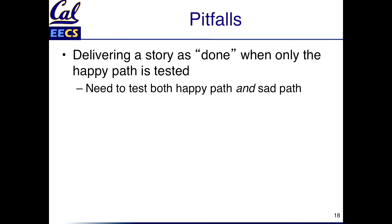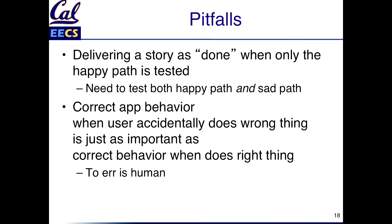Another pitfall is thinking you're done when you've only done the happy paths. You've got a happy path for each feature, it seems to work, and you think you're done. But you really need a sad path as well as a happy path. From a customer's perspective, it's just as important that the feature works as it is that when a user makes a mistake, it doesn't blow up — it reports an error message. Studies show humans have an error rate, so as part of building an app successfully, make sure you have both a sad path and a happy path working.